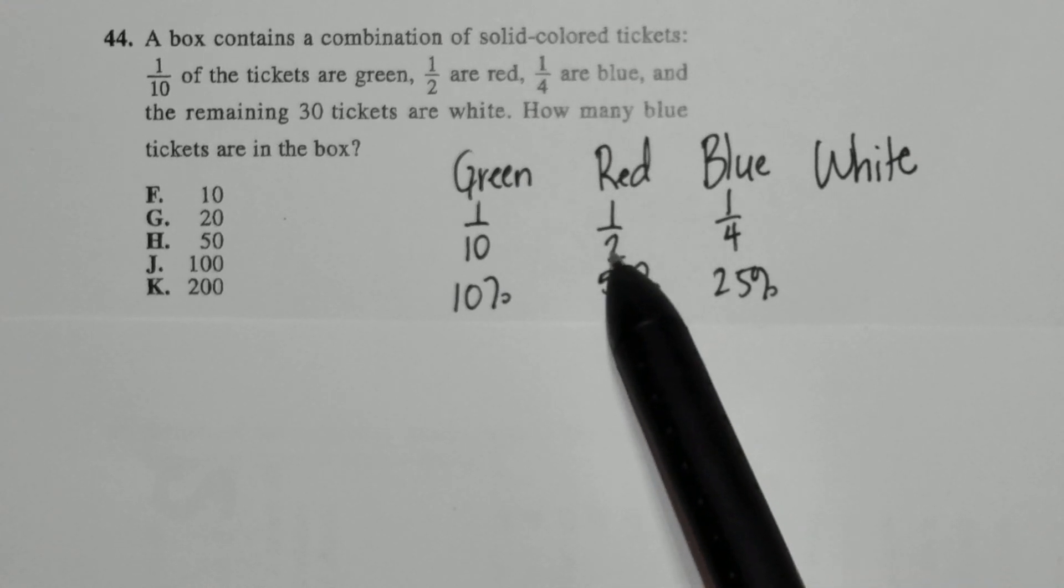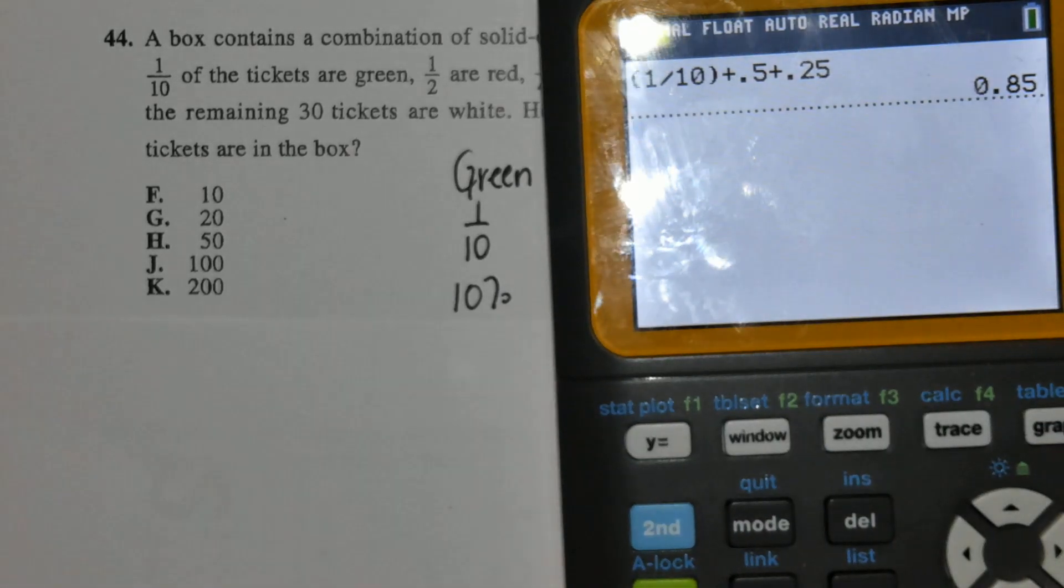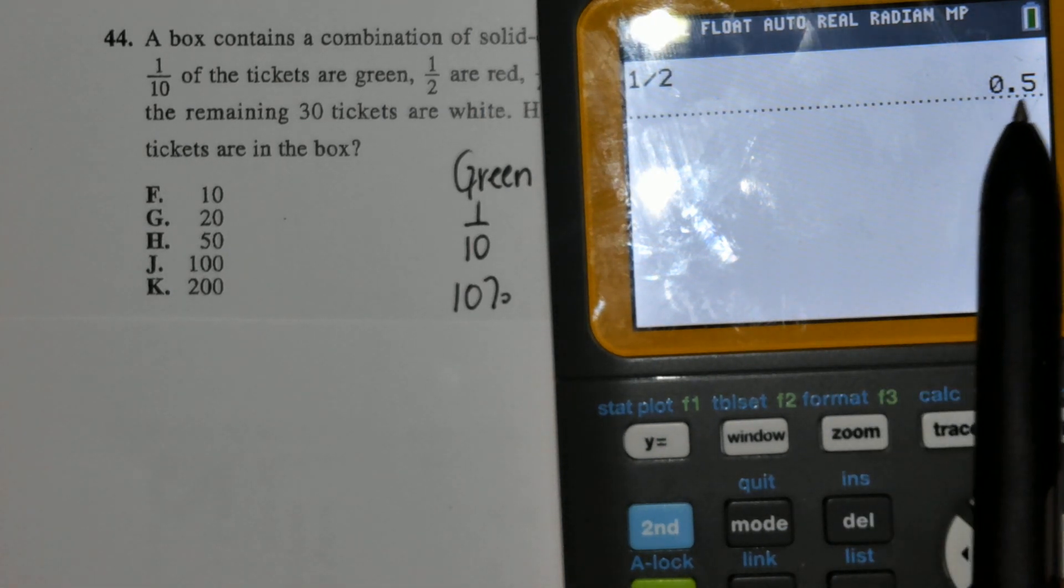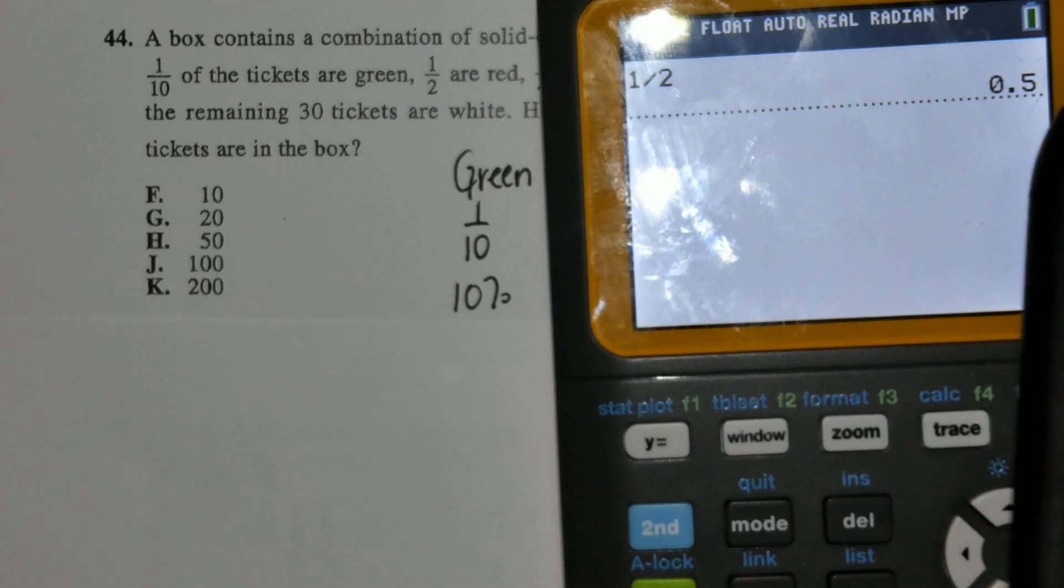And again, if you didn't know this, you could plug it into your graphing calculator as such. So I could plug in 1 half and then turn it into a percentage by moving the decimal two places to the right.